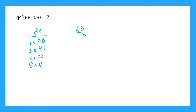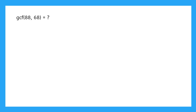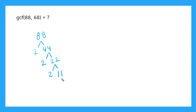Or can you think of another method that doesn't involve a bunch of division? Yeah — prime factorization. So let's make our prime factor tree for 88. We know 2 goes in there 44 times, and 2 goes into 44 22 times, and 2 goes into 22 11 times, and that's all we got because 11 is a prime number. So we can say 88 is equal to 2 times 2 times 2 times 11.